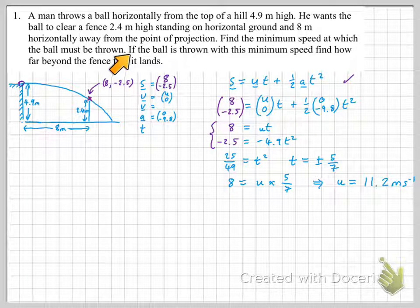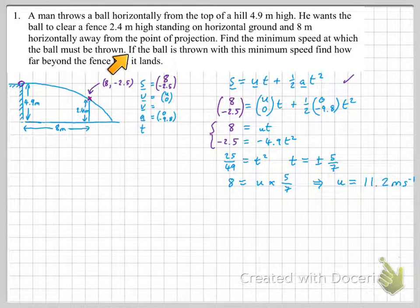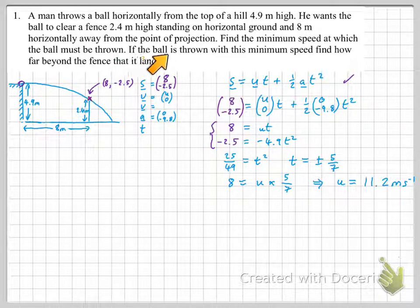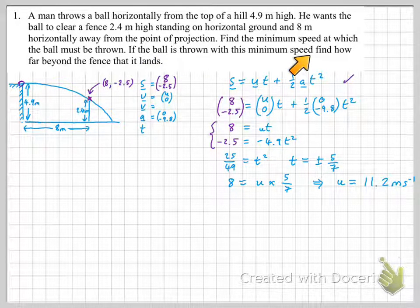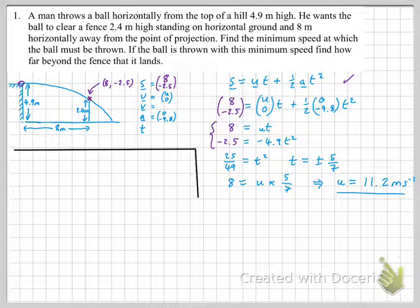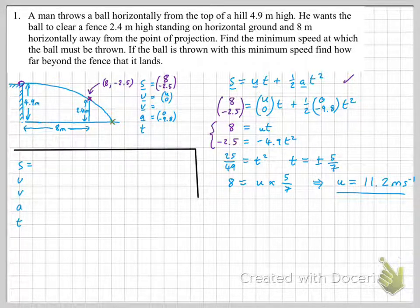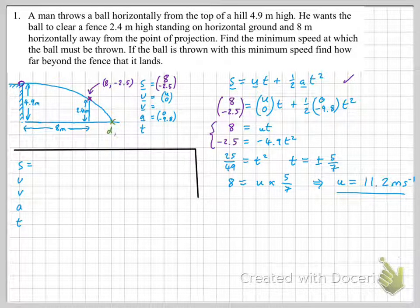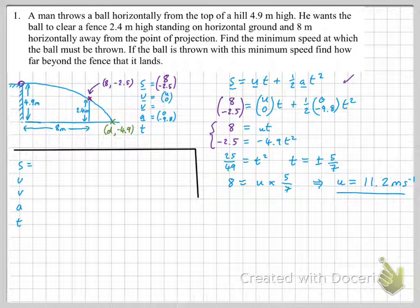Now, we've got a second part of the question to answer, which we will do quite quickly. And it is by the correct method, a similar method. If the ball is thrown with this minimum speed of 11.2, find how far beyond the fence that it lands. Let's just rope off a bit of space here. A new SUVAT. Now, we're trying to hit this point here, which has coordinates something, D. So I'm going to call it D and then minus 4.9. Remember, it's not zero. We need to measure down from here. So it's negative 4.9. So a similar idea. We need to hit that point.